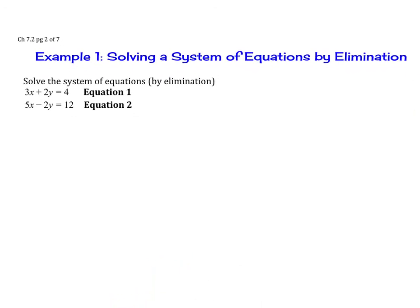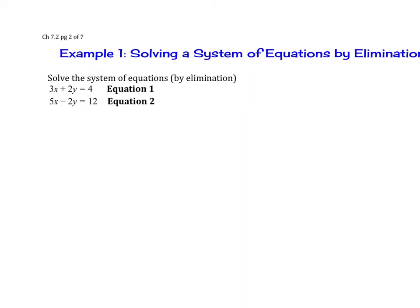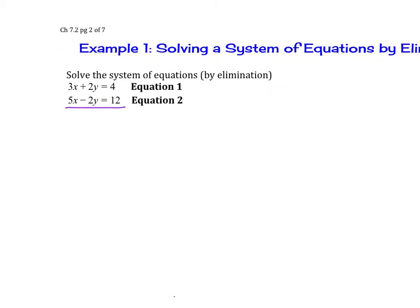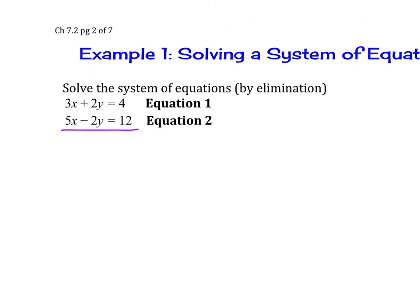Let's try Example 1: solving a system of equations by elimination. When we're solving by elimination, when we add the equations together, we should have a variable that disappears. In this case, we notice that our y values will disappear as soon as we add them together. So we add them together, we get 8x, our y's cancel, and we get 16. Then we solve for x and find that x equals 2.